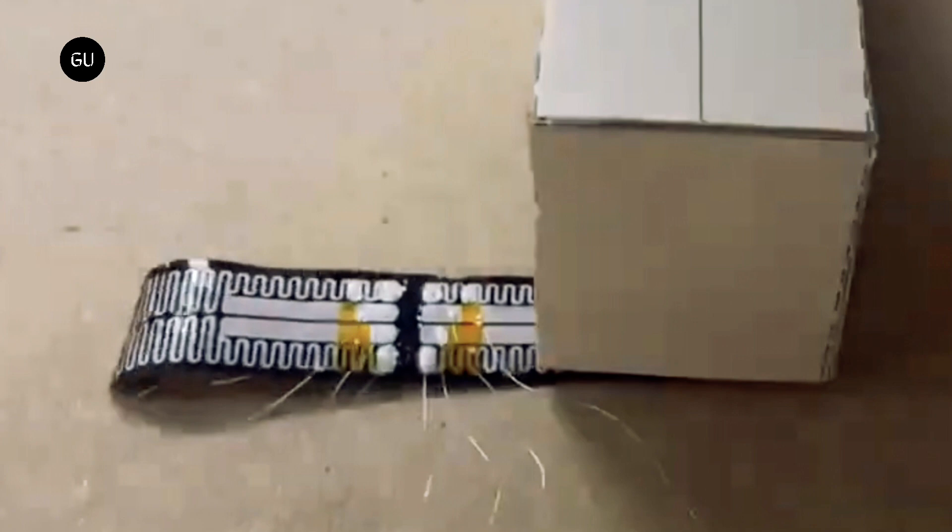The researchers also demonstrated that the caterpillar bot's movement could be controlled to the point where users were able to steer it under a very low gap, similar to guiding the robot to slip under a door.